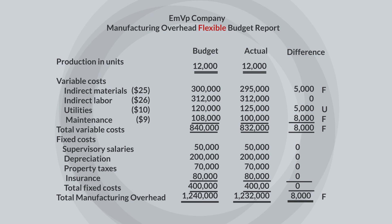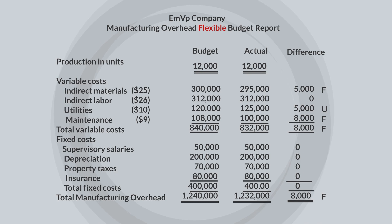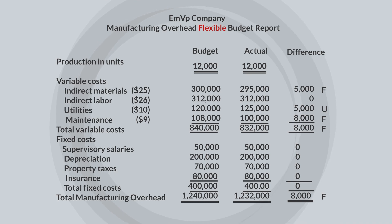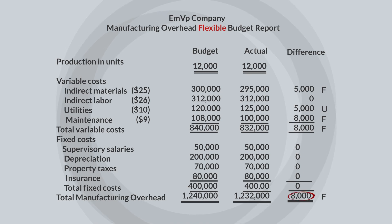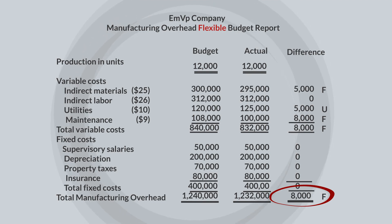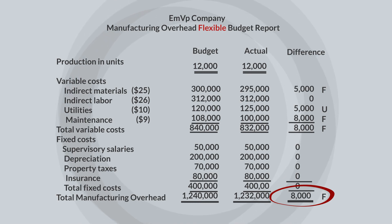This report shows the differences between actual and planned results. The actual cost for indirect materials was less than the budgeted amount, which results in a favorable variance. But the actual cost for utilities exceeded the budgeted amount, so this is unfavorable. Overall, this report indicates that the costs are under budget — a favorable variance. As this analysis shows, the only appropriate comparison is between actual cost at 12,000 units of production and budgeted cost at 12,000 units. Flexible budget reports provide this comparison.